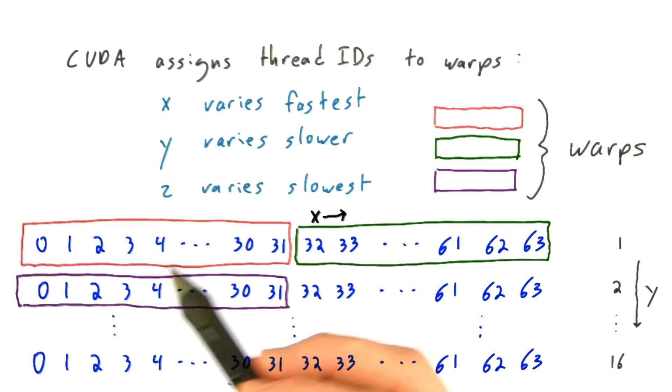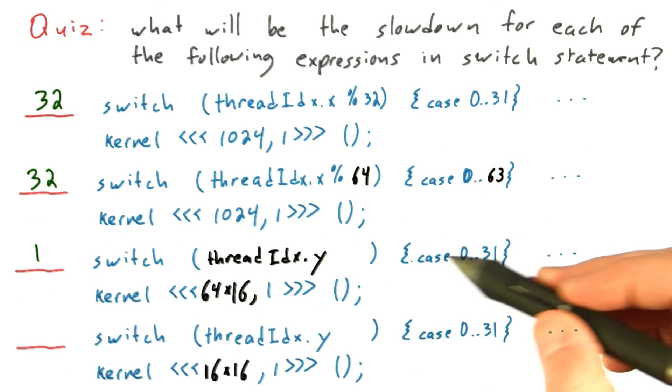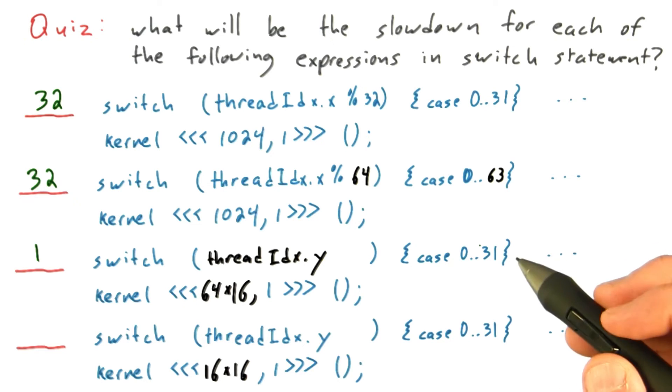So now we know the answer to our question. All of the threads in a given warp, in this case, belong to the same Y ID. They all have the same Y ID. And that means that we'll get no slowdown at all, because all of the threads will be branching to the same place.